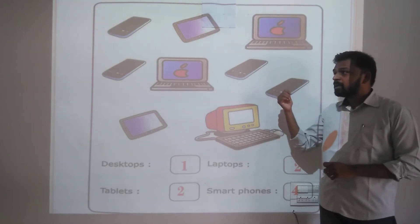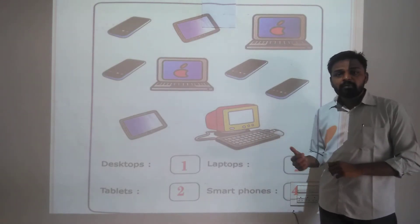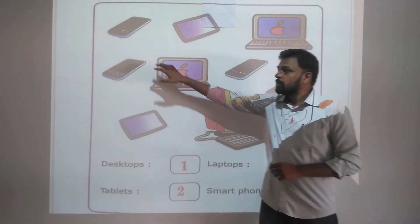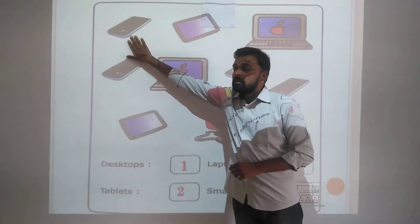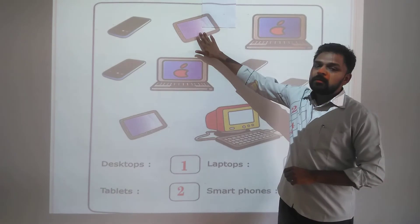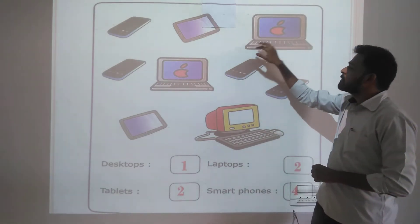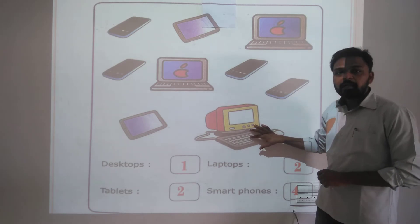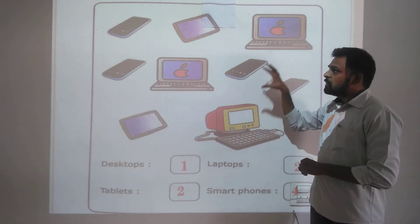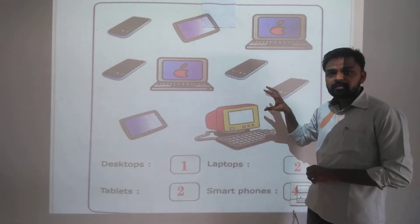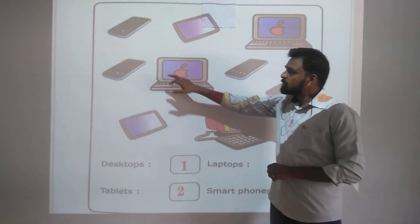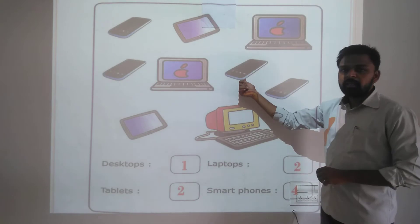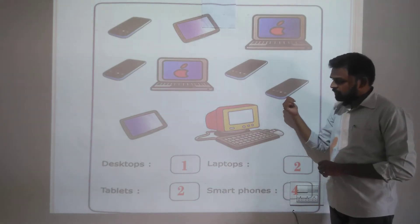The next question asks you to count and write the computer family members. So you have to count — this is a smartphone, tablet, laptop, and desktop. Now you have to group similar computers. Count the smartphones: one, two, three, and four — so four smartphones.